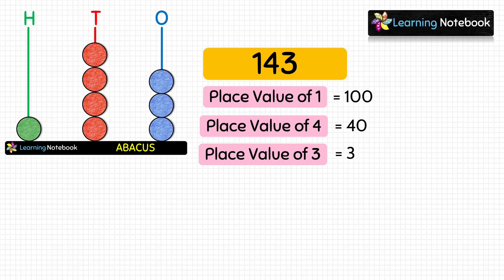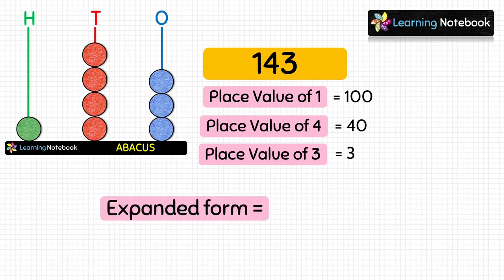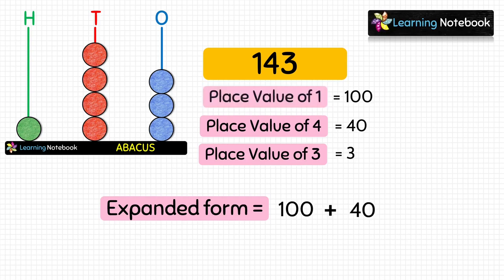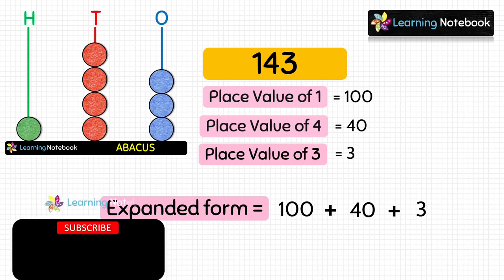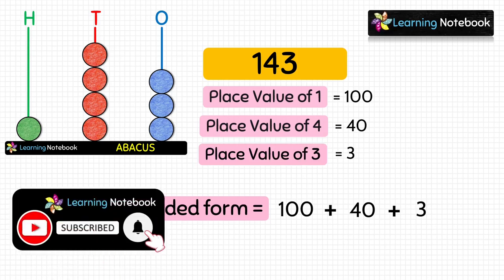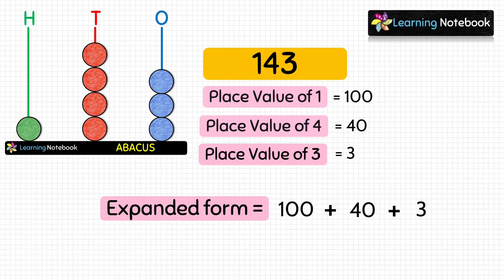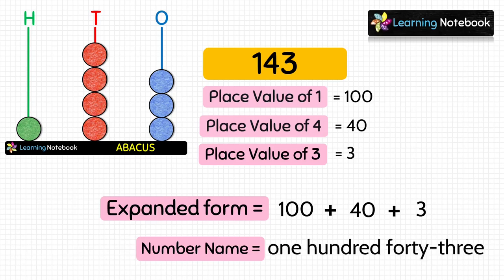Now we have the place value of all digits, so let's write the expanded form. The expanded form of a number is the sum of the place values of its digits. So the expanded form of 143 is: 100 + 40 + 3. The number name is one hundred forty-three.